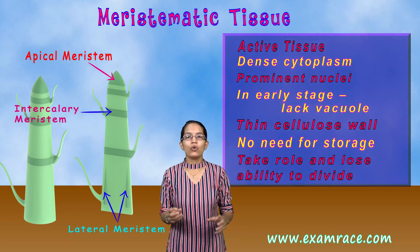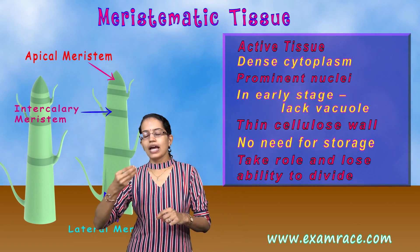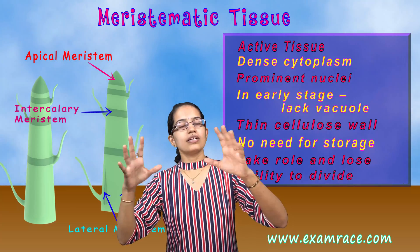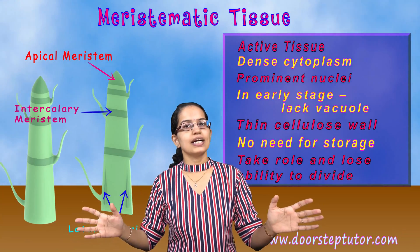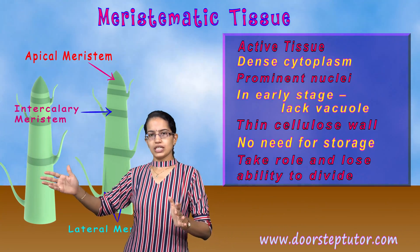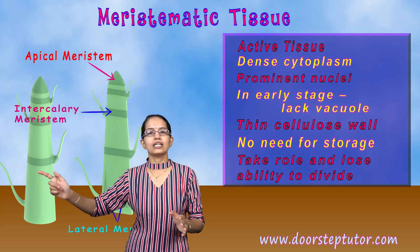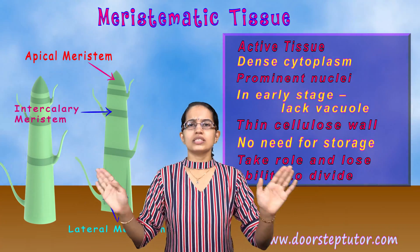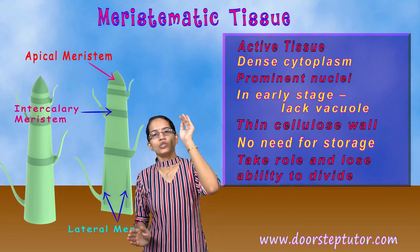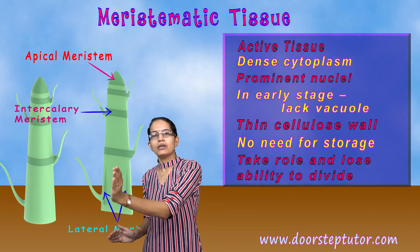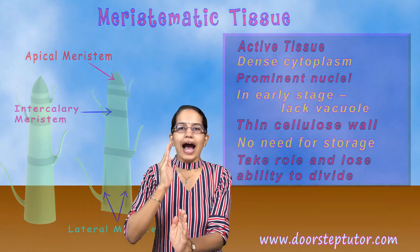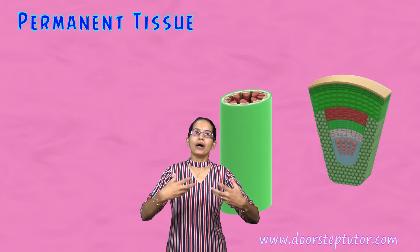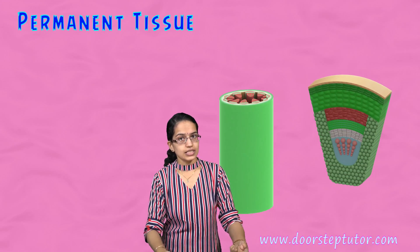They take an active role in development. Finally, as they grow, differentiation starts. As soon as differentiation starts, specialization occurs, and it moves as a permanent tissue and loses its ability to divide — that is the end of the meristematic tissue. As the meristematic tissue ends, you have the permanent tissue that comes in. Permanent tissue has a specialized task, a permanent shape, size, and function, and there is differentiation that occurs.